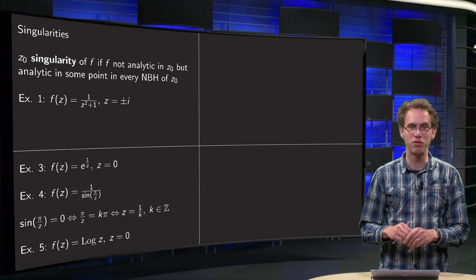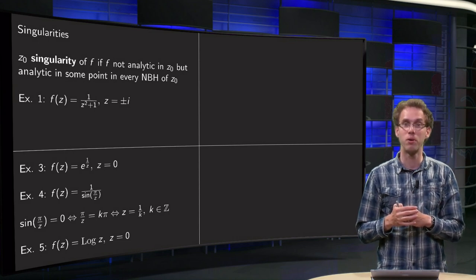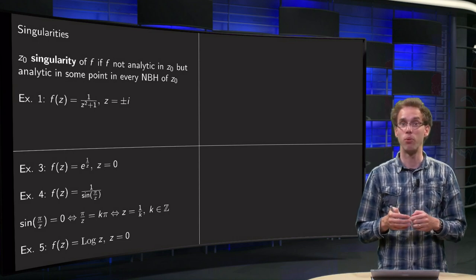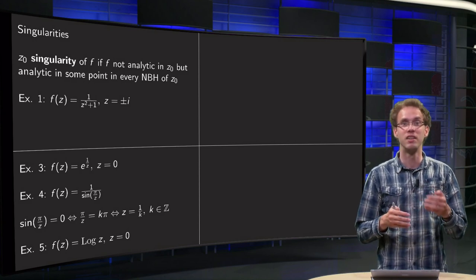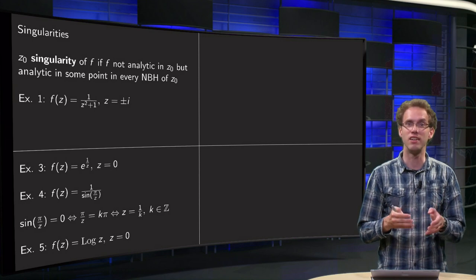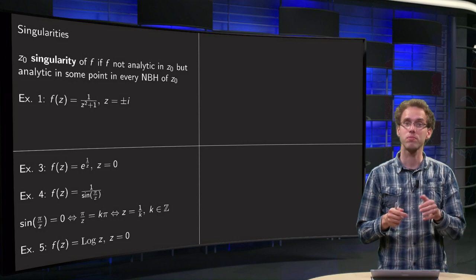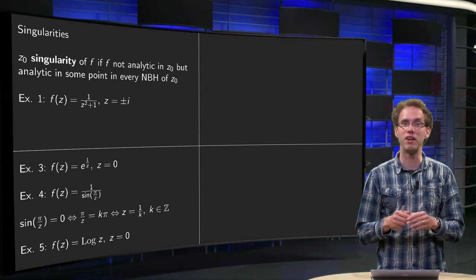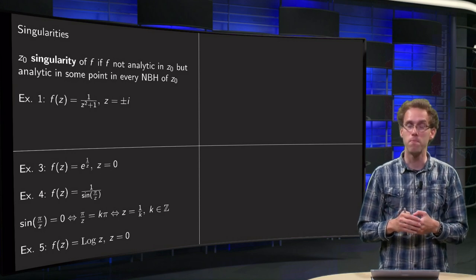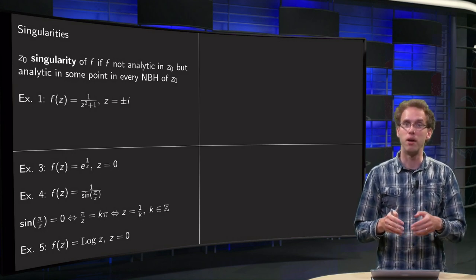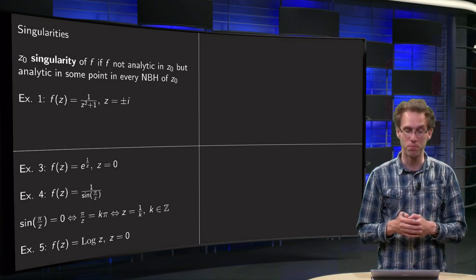Maybe a bit counterintuitive, but we really have to follow the definitions. Then f(z) equals e to the power 1 over z. Well, again, 1 over z is nice, except for z equals 0 where it is not defined. Exponential function is nice and analytic, so the only problematic point here is z equals 0. At that point the function is not defined, but everywhere else the function is analytic. So z equals 0 is a singularity, because you can find a neighborhood from z equals 0 where the function had analytic points.